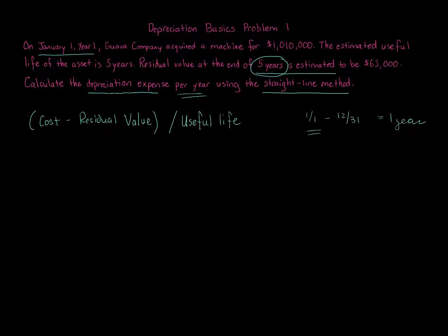The cost—Guava Company acquired a machine for $1,010,000—that is our cost. Minus the residual value, which is $65,000. At the end of depreciating it, we get $65,000. We take that number and divide it over 5 years. We do the calculation.